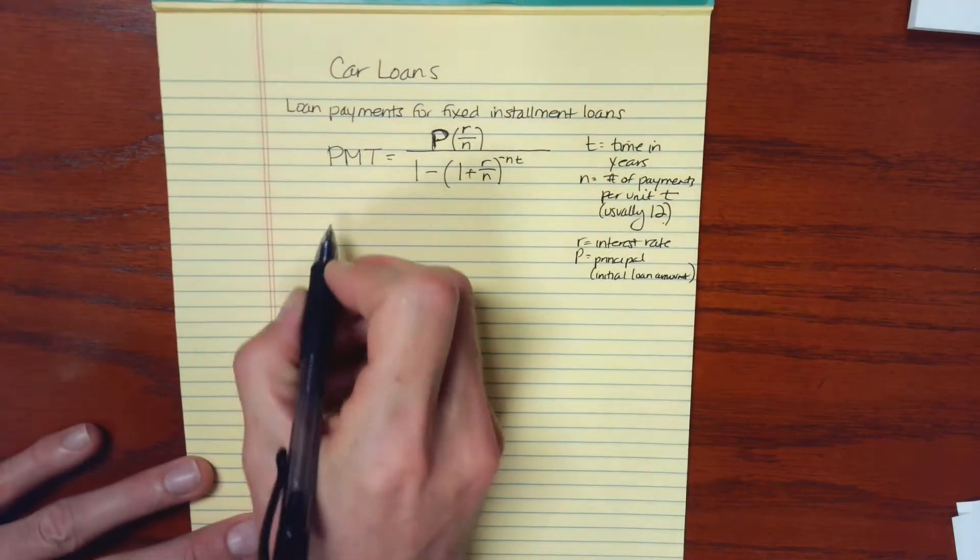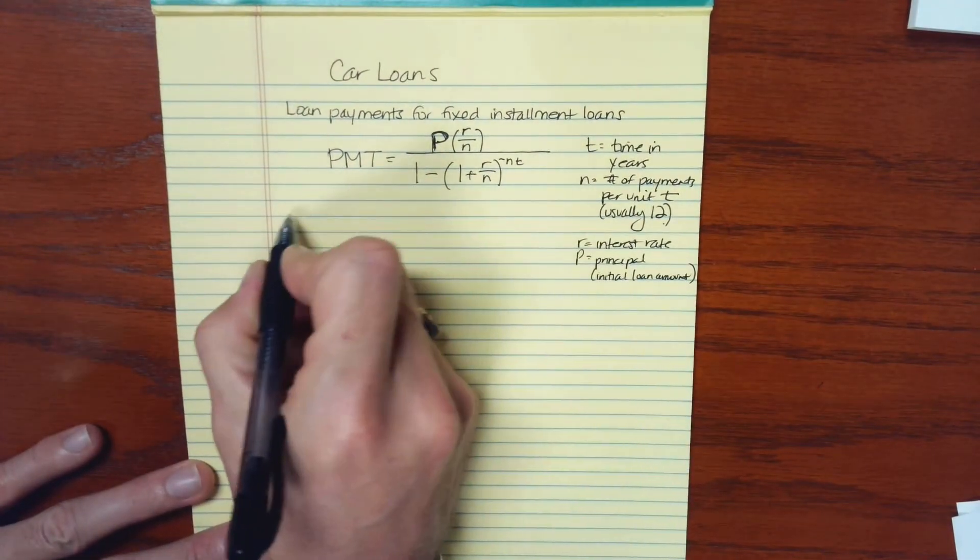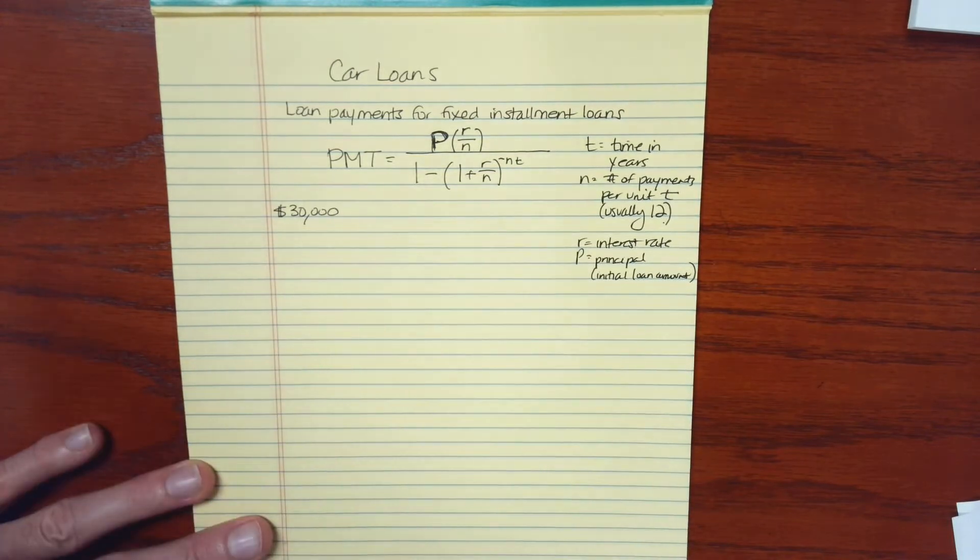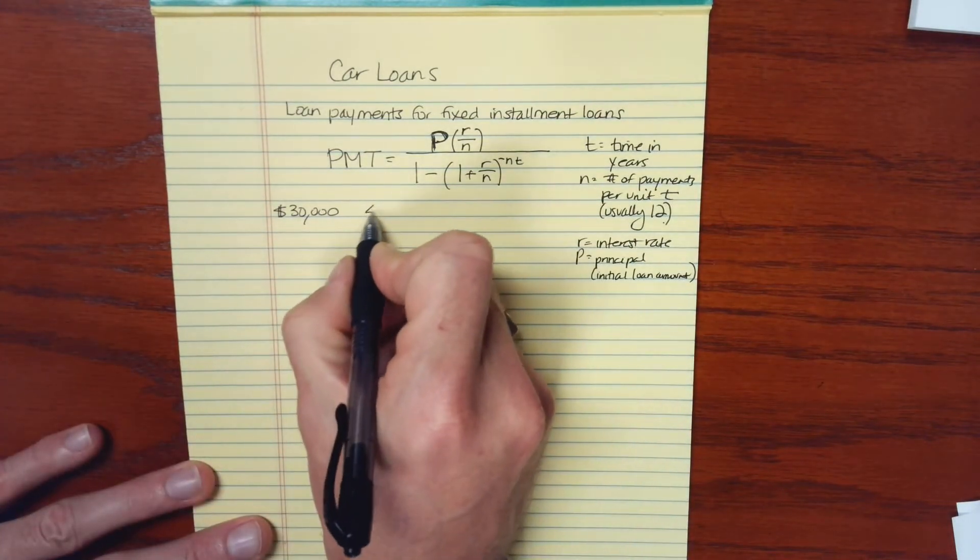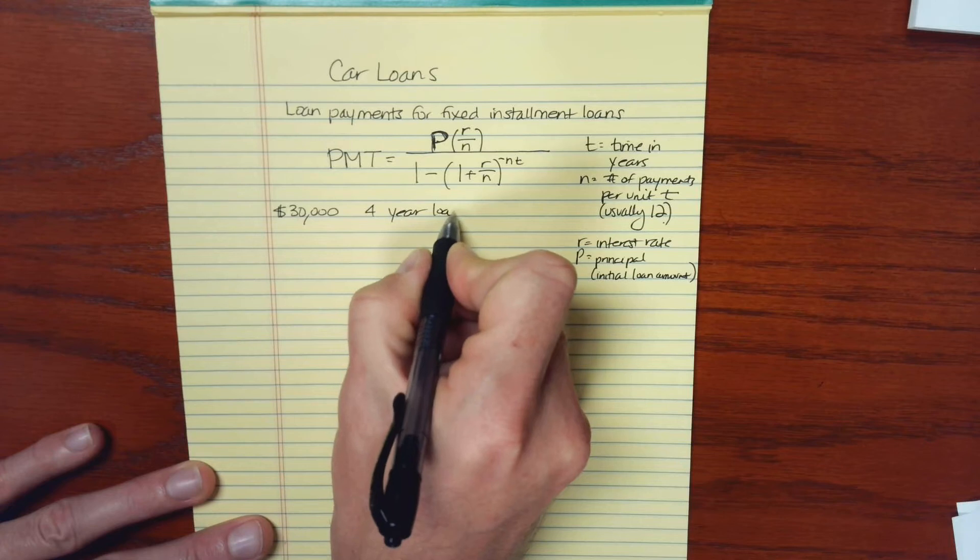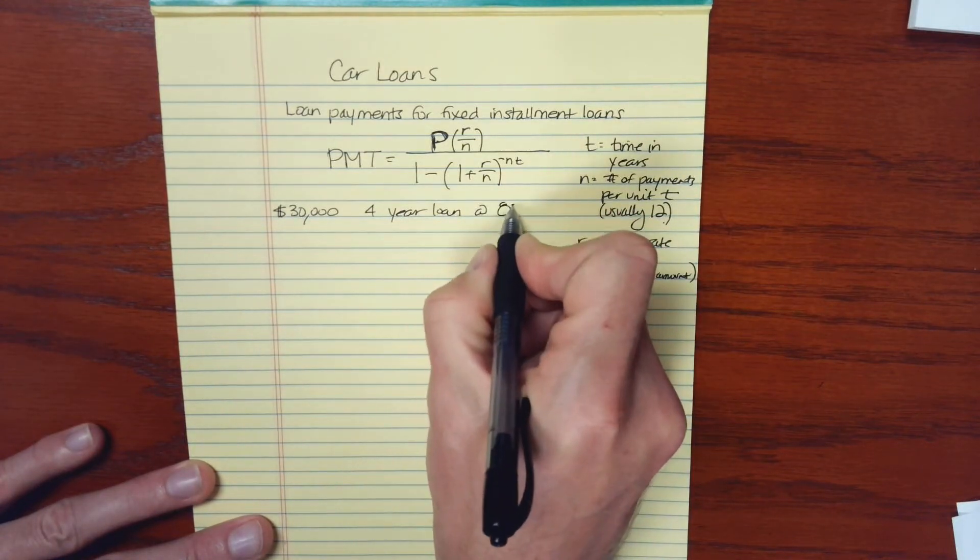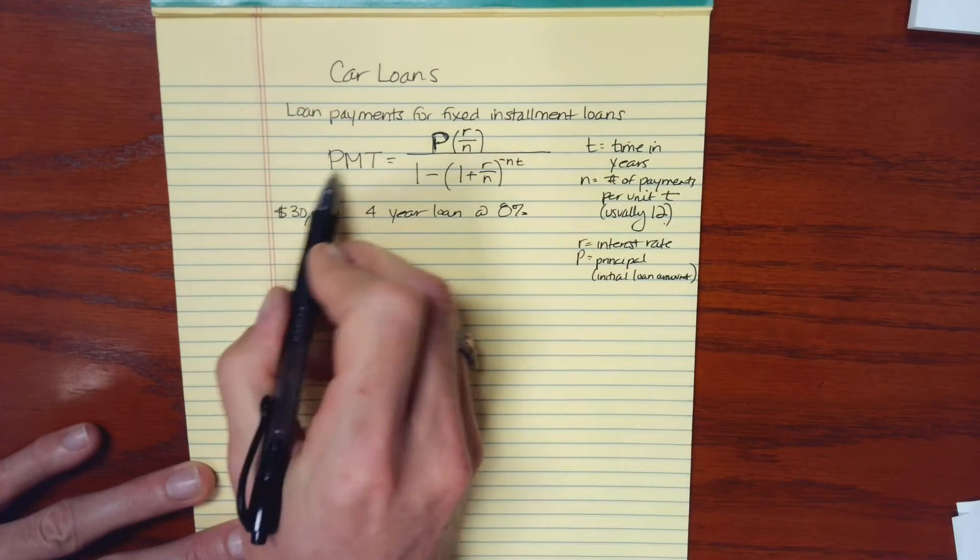So let me just show you an example of how this would work. Let's say that you wanted to purchase a car and it is $30,000. And you're interested in taking out a four-year loan. And the interest rate that you find is 8%. So what would the monthly payment be?